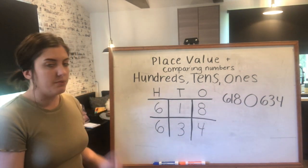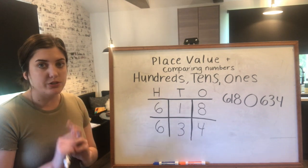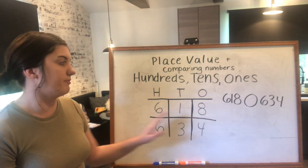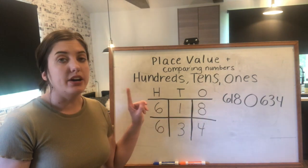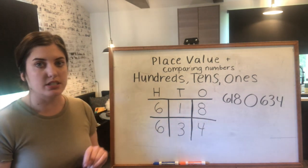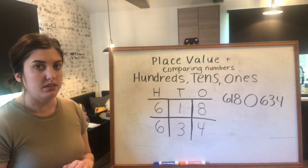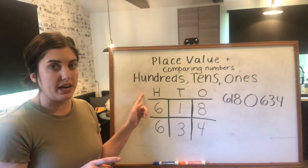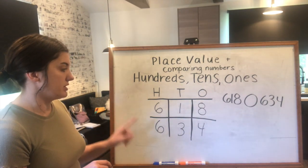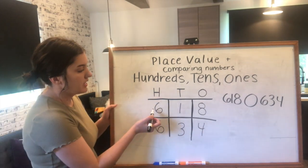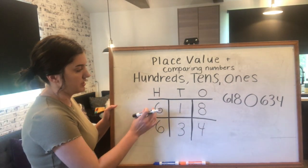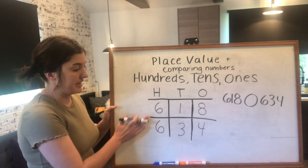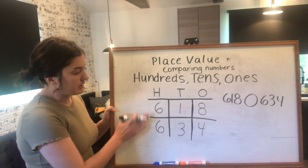Now that we have the numbers lined up, we need to compare them. We start by looking at the greatest place value column first — the hundreds. Are the hundreds the same? Six hundreds for 618 and six hundreds for 634 — yes, they are the same. So the hundreds column did not help us determine yet which number is greater, because both have six hundreds.